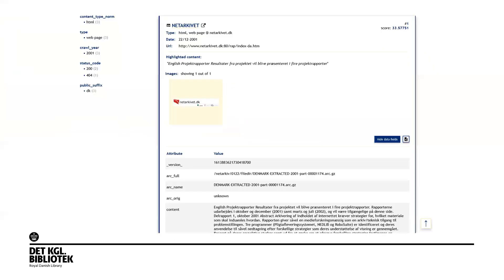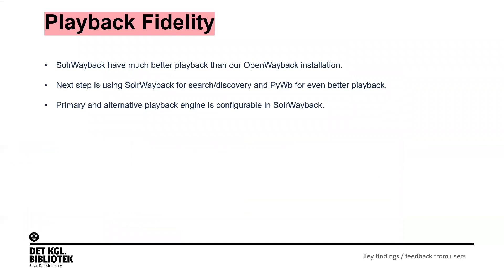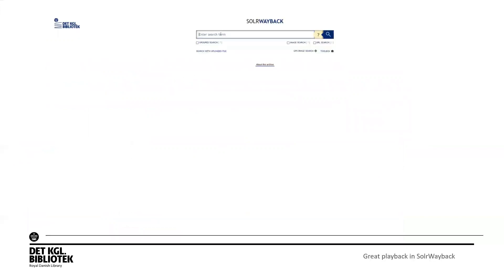Looking at the ARC name, it's from before there was an actual Danish web archive — something ingested from early harvests. A query to view all content in the archive takes around two minutes to get results, but it might look simple — there are a lot of possibilities. An important notion is playback fidelity. Solar Wayback has much better playback than our Open Wayback installation, and the next step may be using Solar Wayback for search discovery and PyWB for even better playback. You can set primary and alternative playback engines in Solar Wayback.